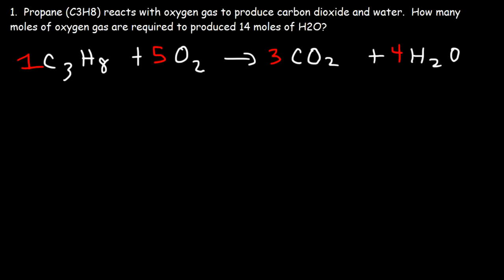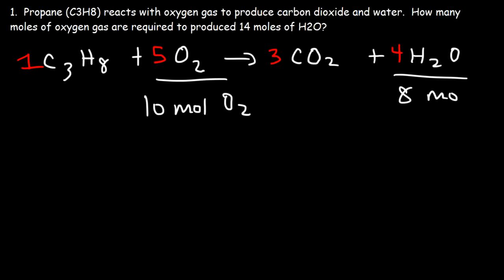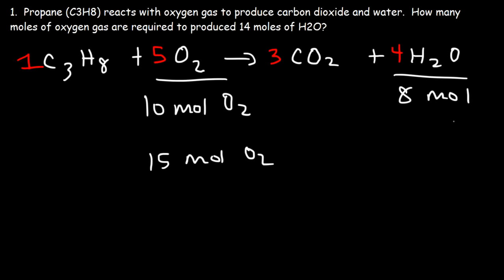Now everything is balanced, so we can answer the question: how many moles of oxygen gas are required to produce 14 moles of water? Let's ballpark the answer. The ratio is 5 to 4. If we have 10 moles of O₂, that reacts with 8 moles of water. Multiplying by 3, 15 moles of O₂ reacts with 12 moles of water. Multiplying by 4, 20 moles of O₂ reacts with 16 moles of water.